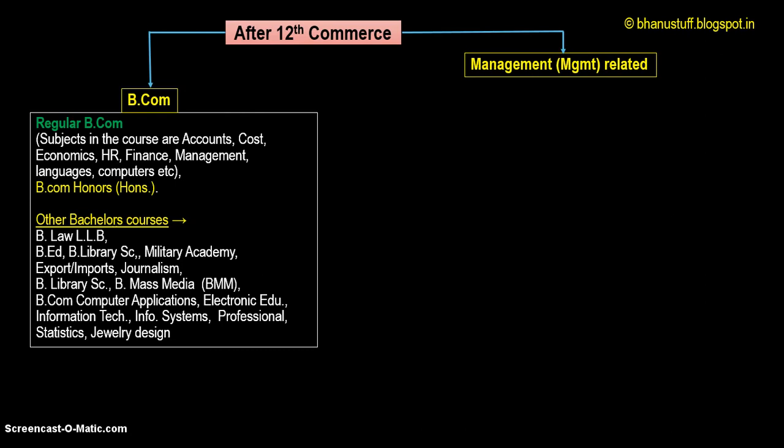Human resources, commonly called HR, involves identifying personnel required for a job, training them, and ensuring they are working properly. Finance deals with cost, money, and taxes. Management is the overall responsibility of taking care of all activities — cost, HR, finance, and economics. BCom also covers languages and computer subjects like Tally, which is a tool widely used by accounting professionals.